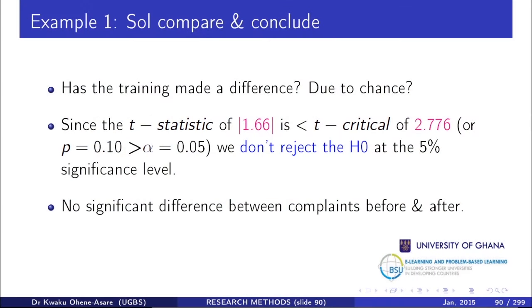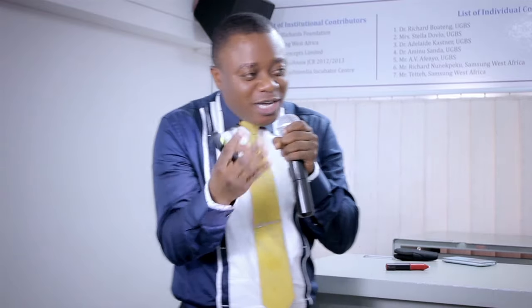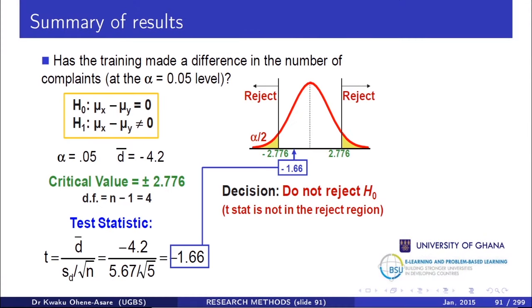Understanding what 'difference due to chance' means is the whole point of the two-sample hypothesis test. There is no significant difference between complaints before and after. The training was bogus. If there was any difference at all, it was just by chance. That is the complete conclusion for this two-tailed test.